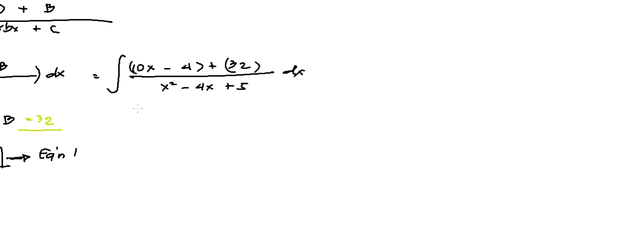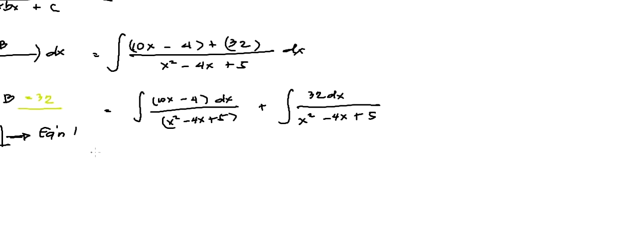How can we solve this integrand? Maybe let's try to separate this into 2 integrands. So we have 10x minus 4 dx all over x squared minus 4x plus 5. Then the other part is we have plus the integral of 32 dx all over x squared minus 4x plus 5.